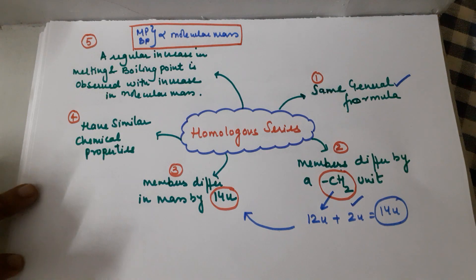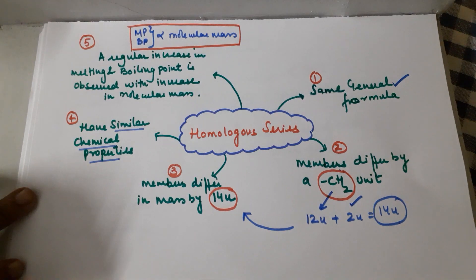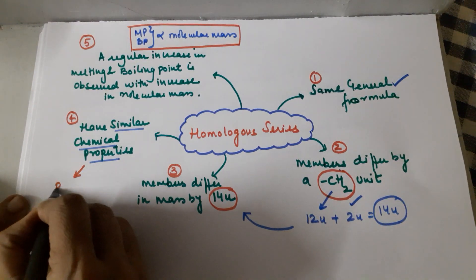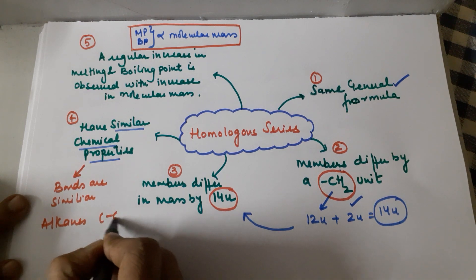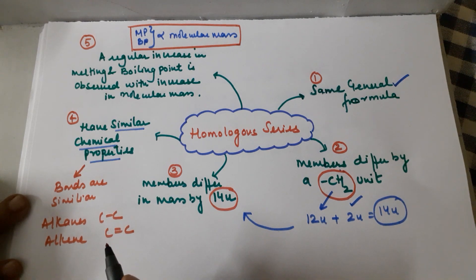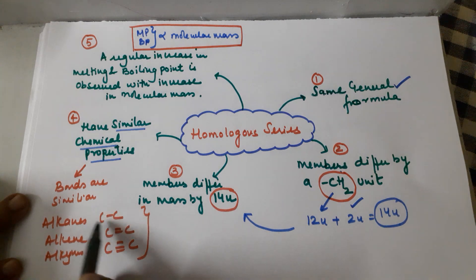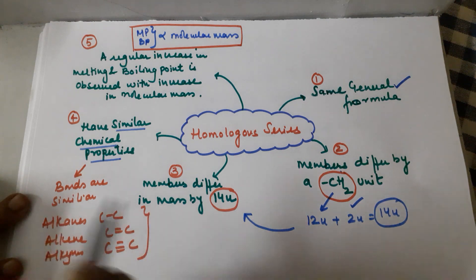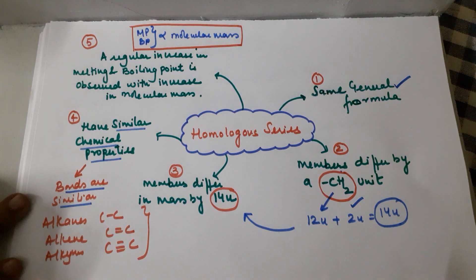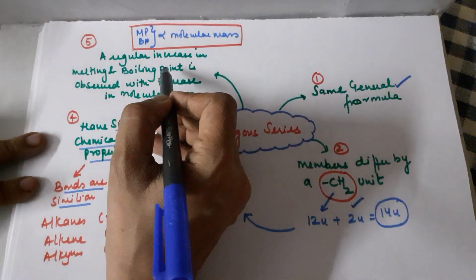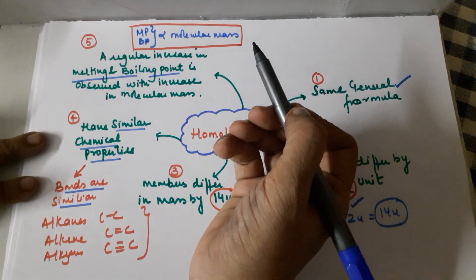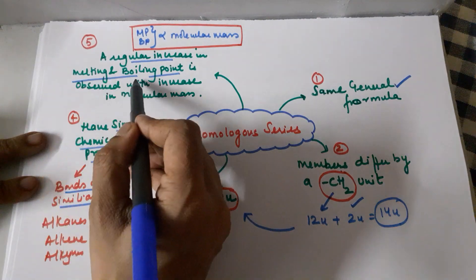The fourth property is that members of a homologous series have similar chemical properties. The reason is that their bonds are similar. Alkanes have only C–C single bonds throughout the series. Alkenes have a C=C double bond in all members. Alkynes have a C≡C triple bond in all members. Because their bonds are the same type, their chemical properties and reactivity are similar across the series.